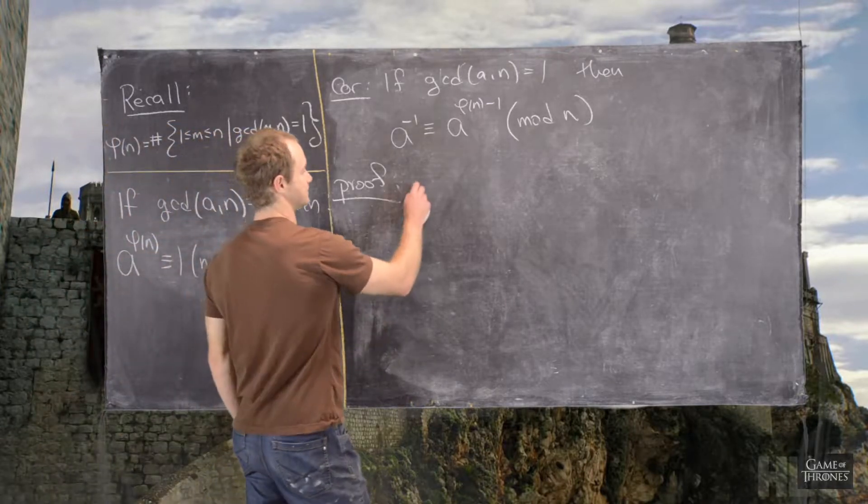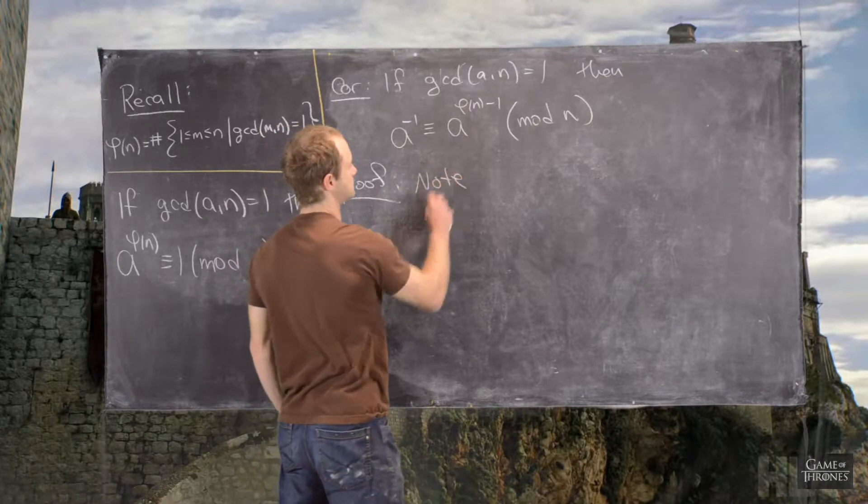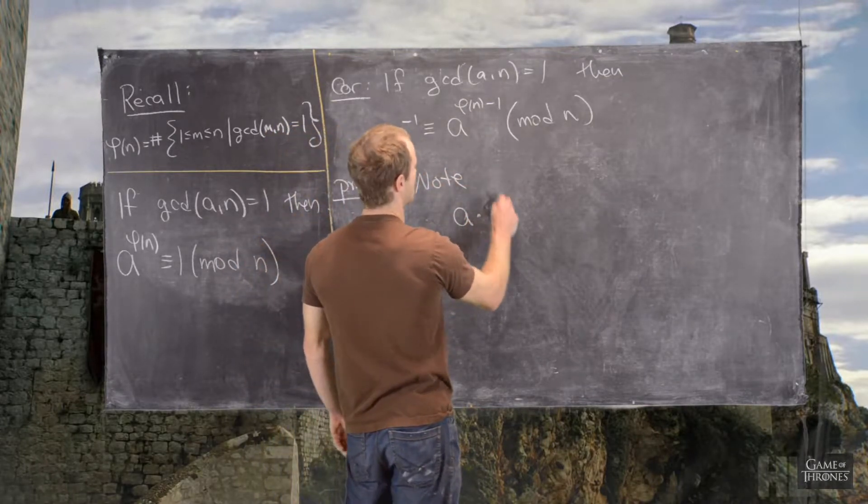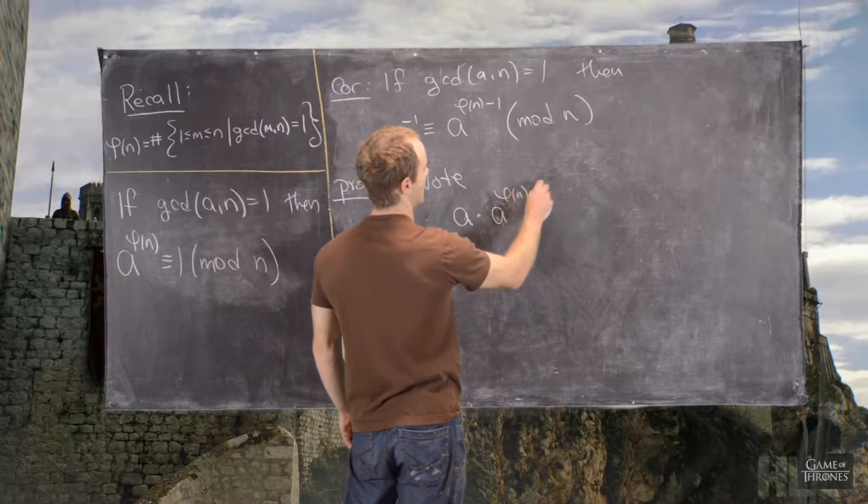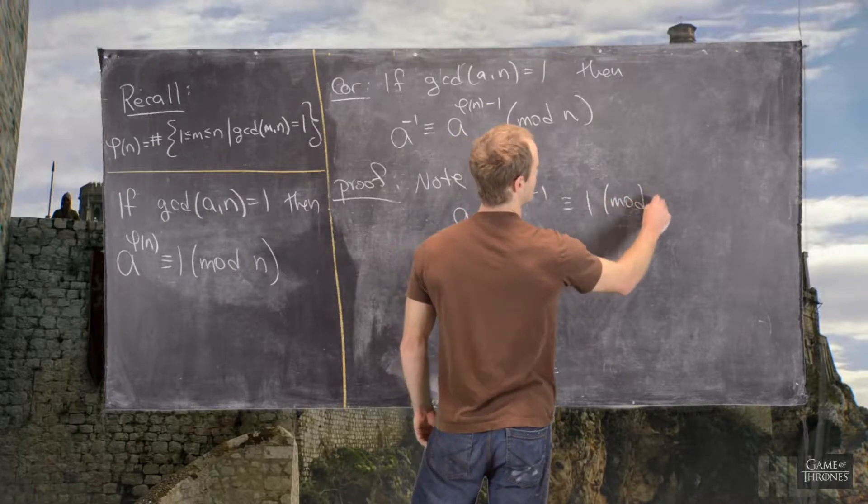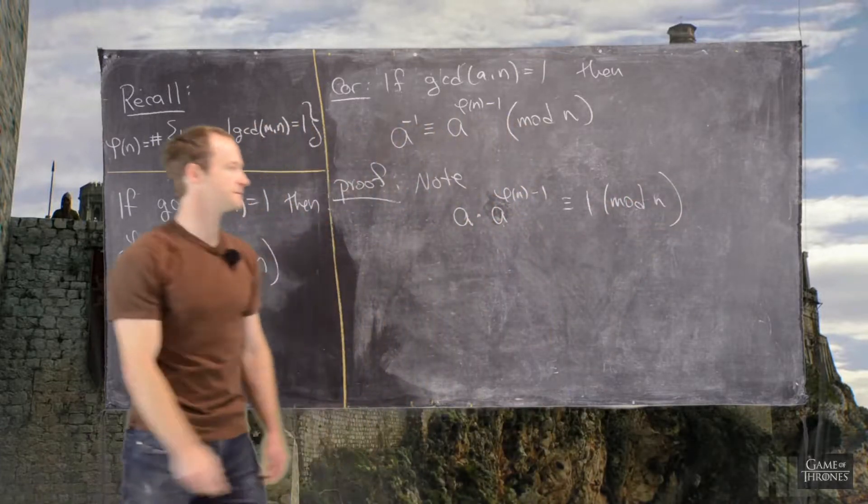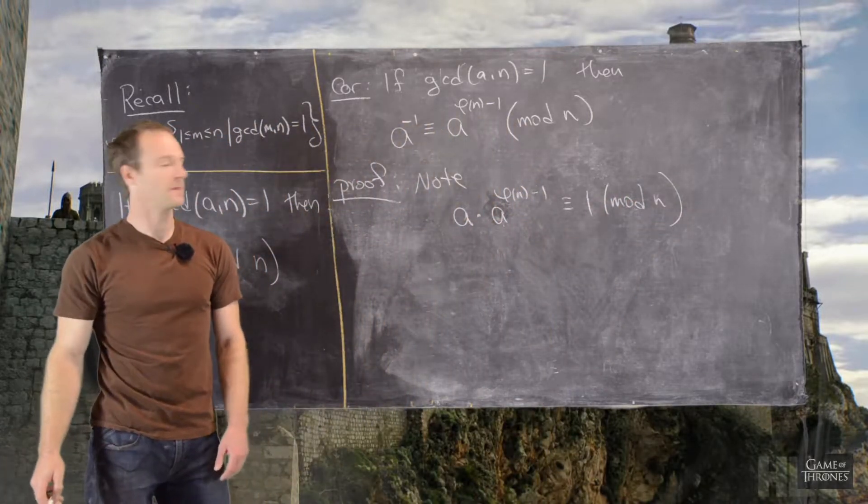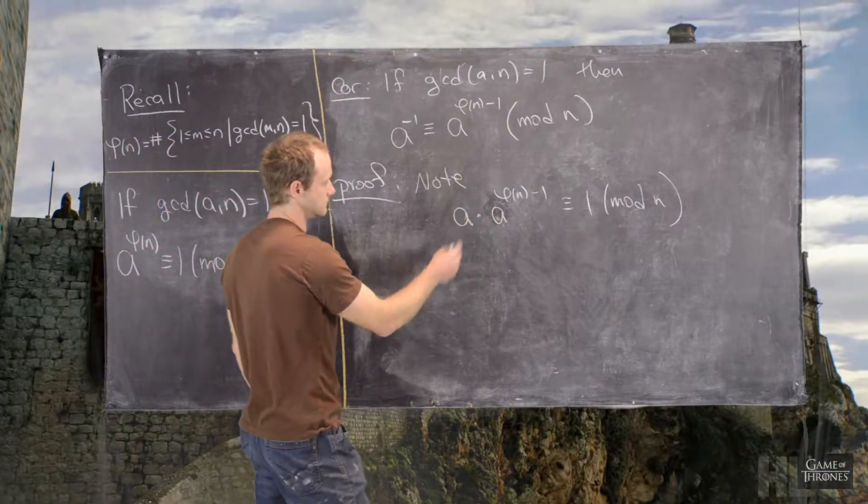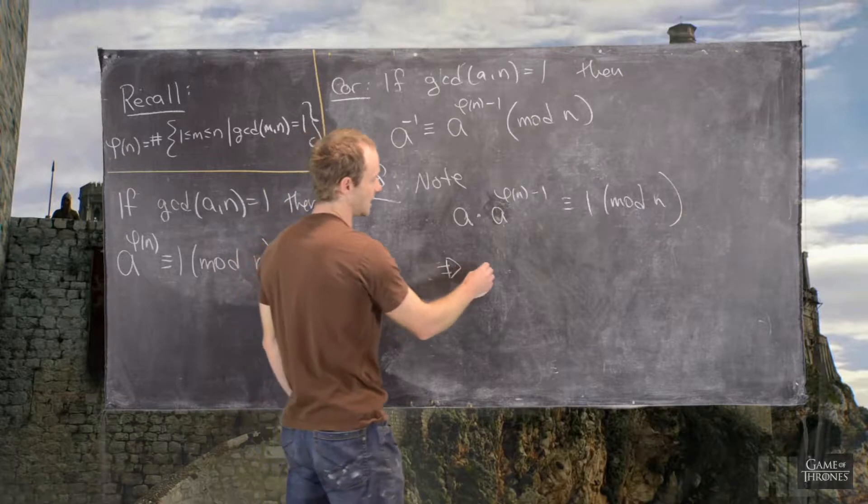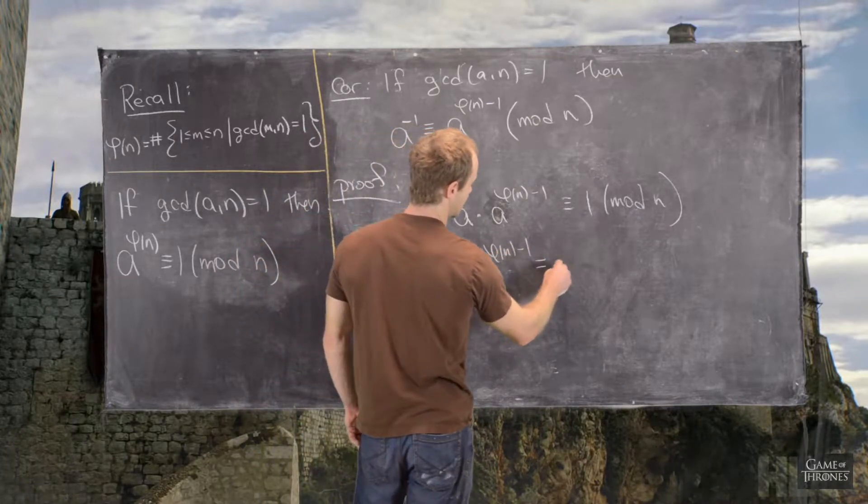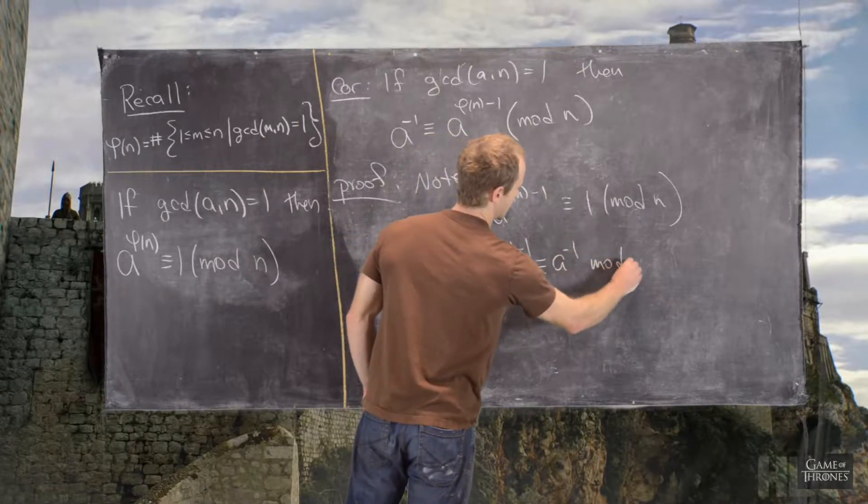So, now moving on to the proof, we'll notice the following. Notice that a times a to the phi of n minus 1 is congruent to 1 mod n. And now, so it immediately follows that a to the phi of n minus 1 is congruent to a inverse mod n.